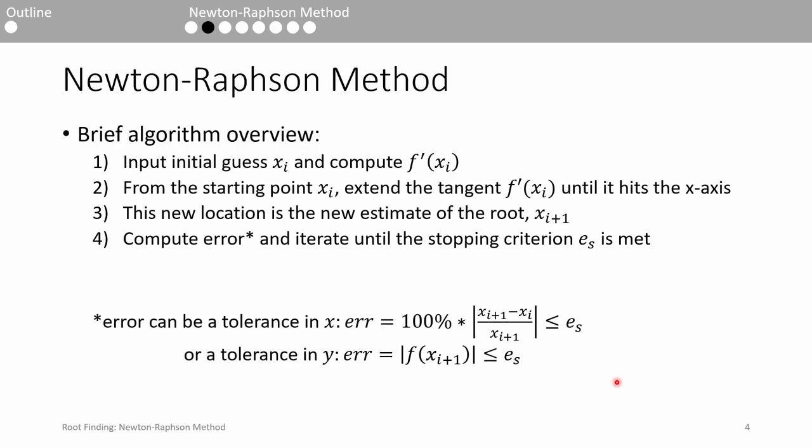From a high-level perspective, the Newton-Raphson method uses the starting guess and the first derivative to deduce the root. First, we need to input an initial guess xi and compute the derivative of f. Starting from the initial guess, we trace the derivative down to the x-axis.